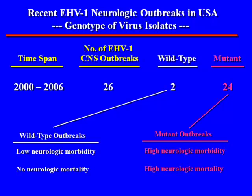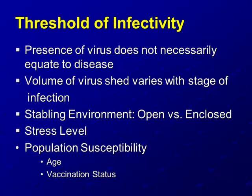In the diagnosis of EHM, the ability for PCR to differentiate between the two strains has been important. Threshold of infectivity is also something that came out of that original discussion. The presence of the virus does not necessarily equate to disease — that's important to recognize when we talk about surveillance. We do not routinely recommend testing a whole population of horses, because you will find positive horses; that does not mean that you have disease or that those horses are necessarily infective. The volume of virus shed varies with the stage of infection, and a low level of virus has the potential to cause disease, but many times does not.